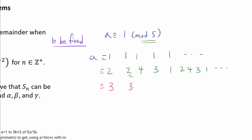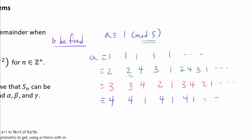When a is congruent to 3 mod 5: 3, 9≡4, 12≡2, 6≡1 mod 5, so 3, 4, 2, 1 repeats. When a is congruent to 4 mod 5: 4, 16≡1, then 4, 1, 4, 1 repeats. And when a is congruent to 0 mod 5, we are always going to have 0 for any positive integer power.